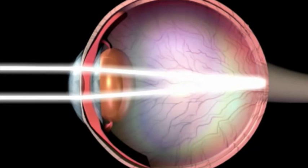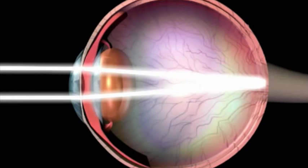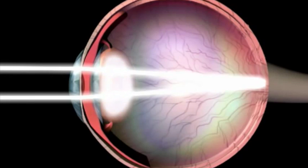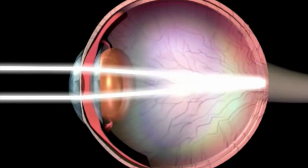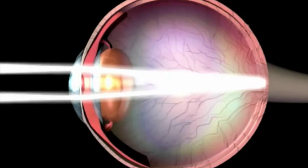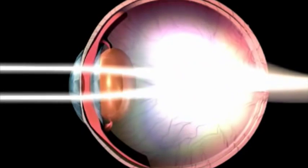Light passes through the cornea and pupil, which control the amount of light that enters the eye. The light then passes through the gel-like substance of the aqueous humour, is focused with the lens, and directed through the vitreous humour to the retina. The retina is the light-sensitive inner lining at the back of the eye. It converts optical images into electronic signals that the optic nerve then transmits.